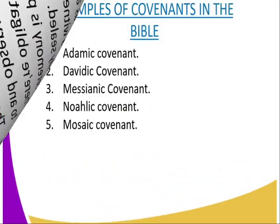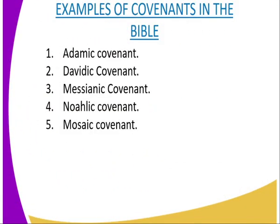Now we look at the examples of covenants in the Bible. We have the Adamic covenant, the Davidic covenant, the Mosaic covenant, the Noahic covenant, and the Mosaic covenant. Those are examples of covenants in the Bible.